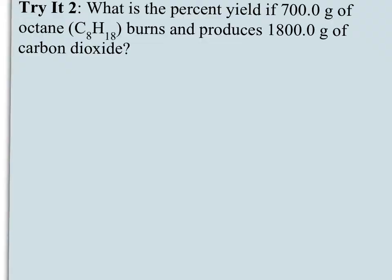So my second example here is being asked, what's the percent yield of 700 grams of octane burns? So that's going to be with O2. And produces 1,800 grams of carbon dioxide. But remember, combustion reactions will also produce H2O when it's fossil fuel or hydrocarbon. So go ahead and pause and see if you can come up with the balanced equation, the theoretical yield, and then use that to calculate your percent yield.